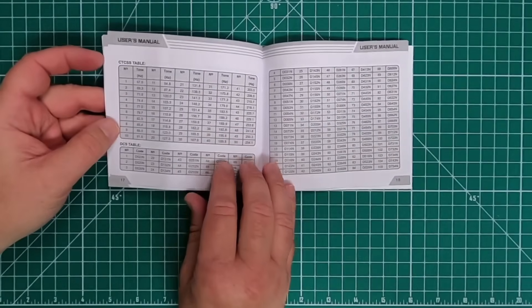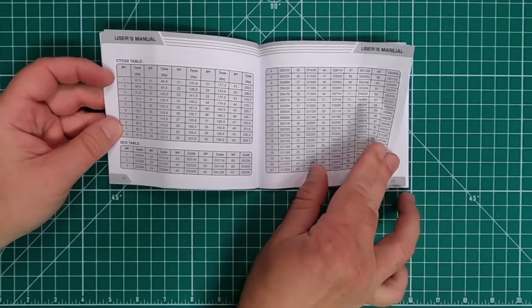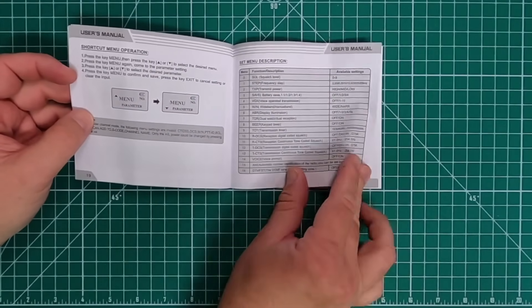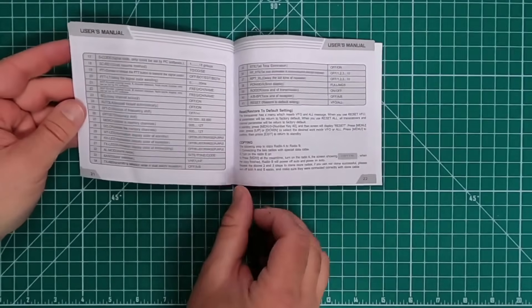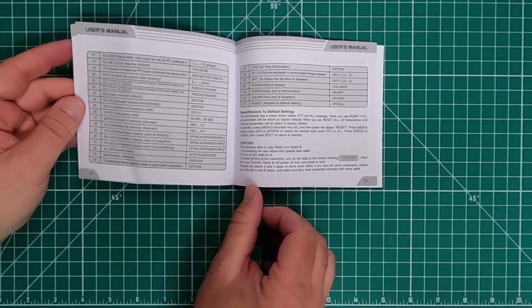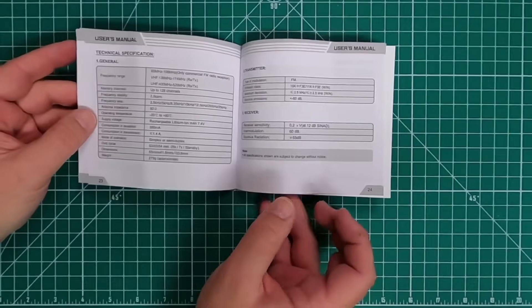They give you all the CTCSS and DCS codes. A couple pages later, you have all the menu items. And in this radio, there's 41 menu items, and we'll go through those here in a sec. All in all, pretty good manual.